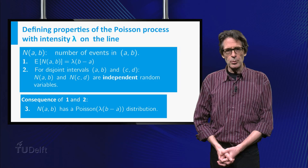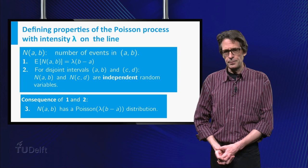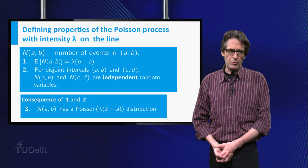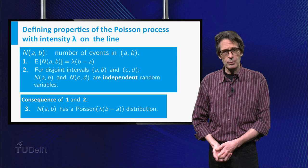As with probability distributions, the Poisson process models an ideal situation. No real physical phenomenon will behave exactly as a normal variable. Likewise, in reality, a Poisson process will only take place approximately.